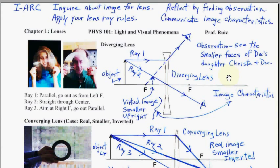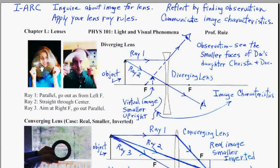We only need two rays to get the conclusion. Here we see the observation where we have my daughter Krista, and we are holding diverging lenses in front — and you see baby faces, smaller faces. This is the baby face, and here's the face itself, the object. So you see the baby face, and that's reflecting on our analysis to give us an observation.